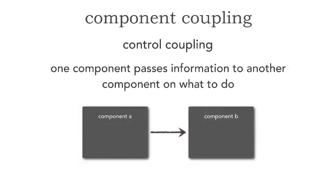Going down the list now to looser coupling, we have control coupling. Control coupling says that one component passes information to another component on what to do. So component A sends information to component B, but when it does, it has directives saying: component B, I would like you to take this path or that path. This is a form of coupling because component B cannot make its own decision — it relies on component A. If I were to change those operations or the directive — these are sometimes those indicator flags, like add, remove, delete — this is usually pretty easily addressed. Instead of having a generic save operation where component B has to know whether it's an update, delete, or insert based on a control flag, instead make those three separate operations: an insert, update, and delete. That way, I've further decoupled my systems.